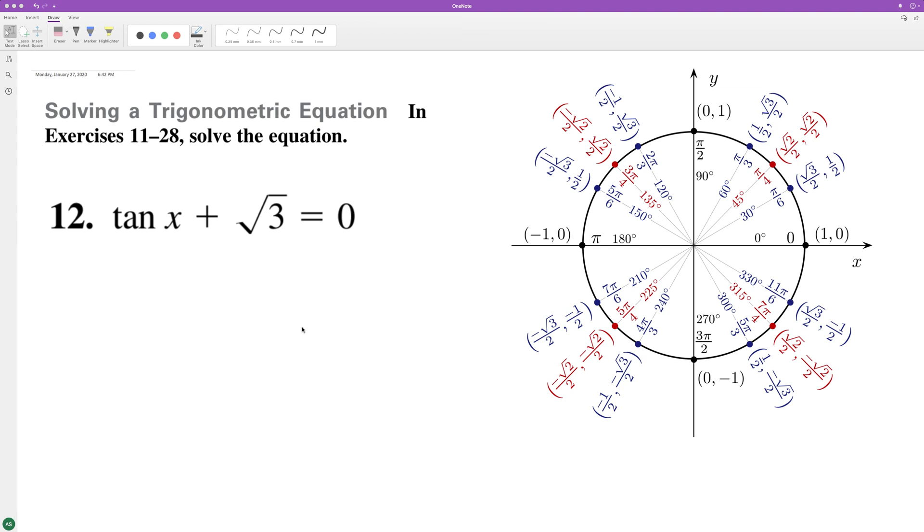Solve this equation from 0 to 2π. What we'll do here is we'll get the radical of root 3 on the right side, so it's negative root 3, and then we take the inverse tangent of negative root 3.